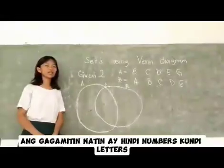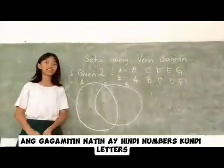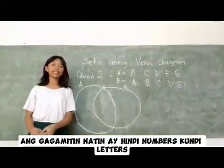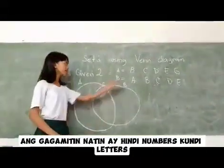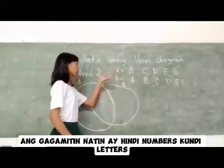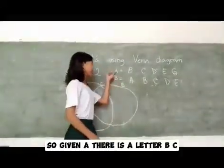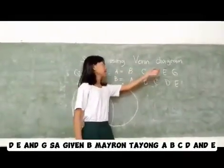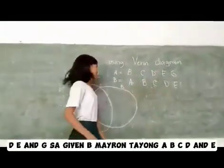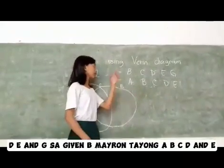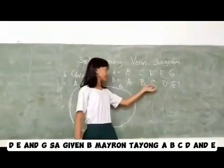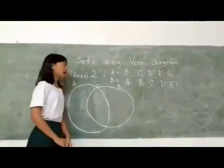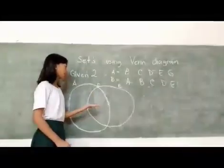It is another video of using the diagram in sets. Pero ang gagawin din natin ay hindi number, kundi letter. Given A and given B. Sa given A, meron tayong letter B, C, D, E, at G. Sa given B, meron tayong A, B, C, D, at E. Para mahanap ang intersection or letter, ay kailangan hahanapin ang magkakaparehas na letter.